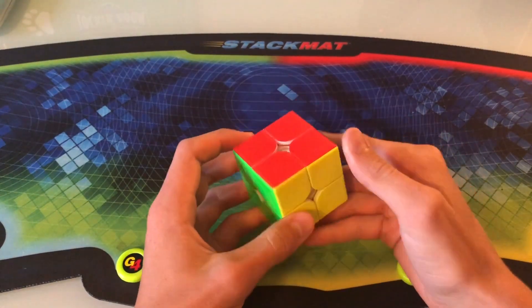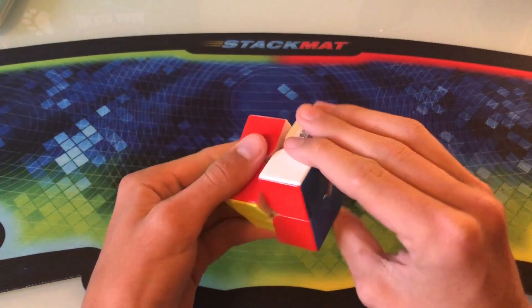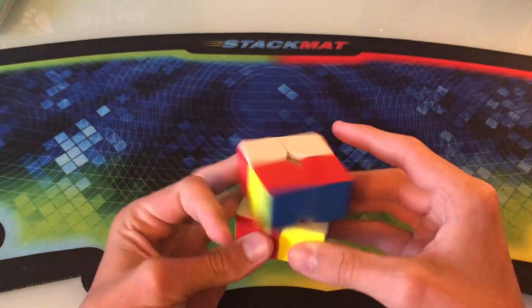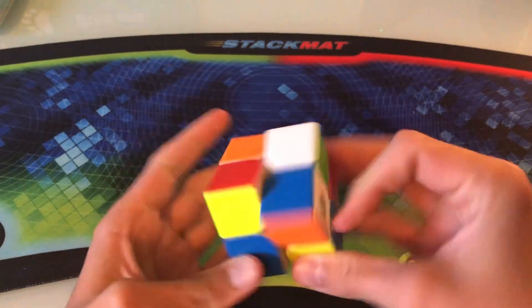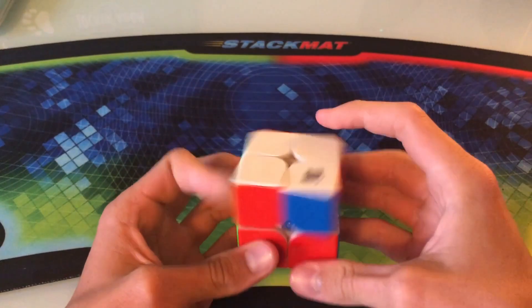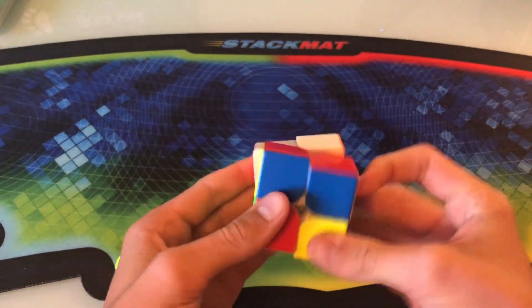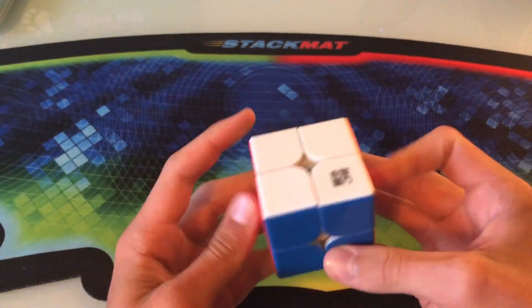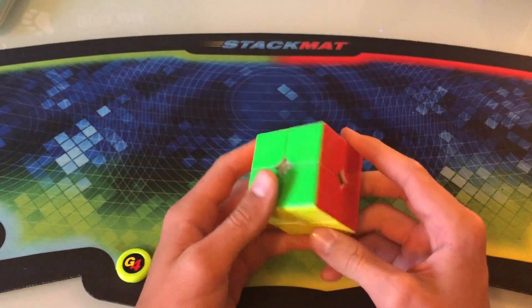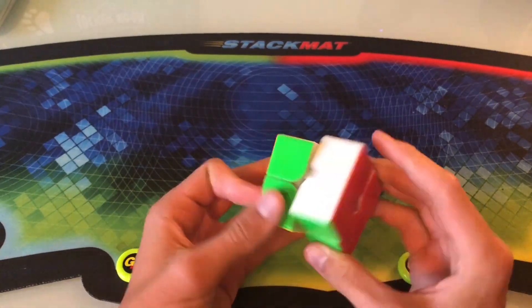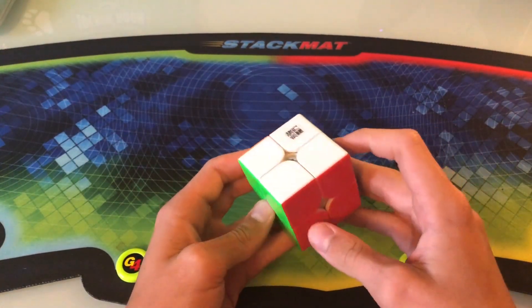On to the most important thing, of course, which is the feel and turning of the puzzle. The turning, if you do it slow, is kind of bumpy. But once you start turning a little bit faster, you really don't notice it at all, and it's certainly not a problem, in my opinion, especially if you're speed solving. I guess if you were practicing slow solving, maybe it might get a tad bit annoying. But overall, I don't really think that's anything to worry about too much.